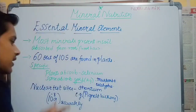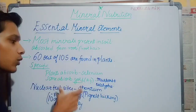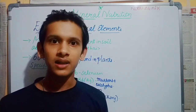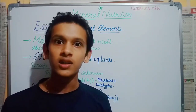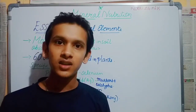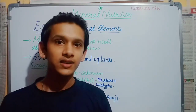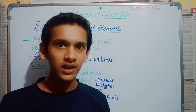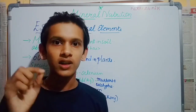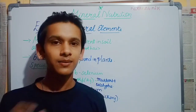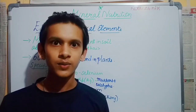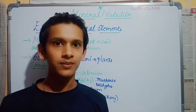Some plants also absorb gold. Gold is a valuable mineral. For example, mustard plants and eucalyptus plants growing in areas where gold is present in the surrounding soil will absorb it, though only in trace amounts. We have to identify these amounts using laboratory techniques. Gold absorption in plants is a shocking issue, and we have learned something very essential from this chapter.